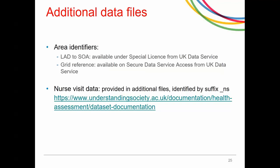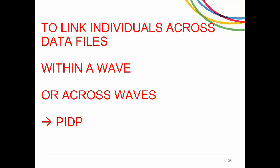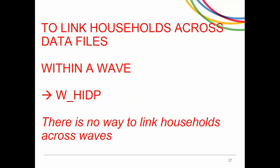Additional data was also collected by nurses. For part of the sample, this was collected after the second wave, and for the BHPS sample, after the third wave. You can find more information about this by following the link provided. Finally, if you want to link individuals across different data files — whether within a wave or across waves — you need to use the variable PIDP. If you want to link households across data files within a wave, you need to use the variable HIDP with the wave prefix. Remember, there is no way to link households across waves as there is no concept of a longitudinal household.